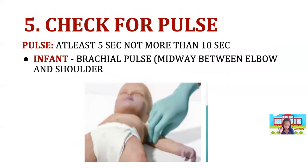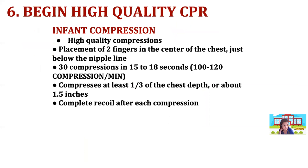For checking the pulse in infants, do not use the carotid pulse — use the brachial pulse. Locate the midpoint between the shoulder and elbow on the inner arm. Count for one to 10 seconds, not more than 10 seconds.